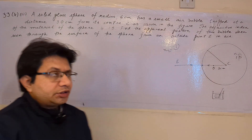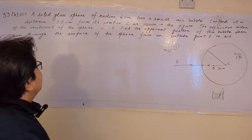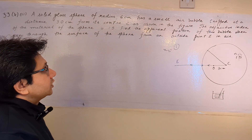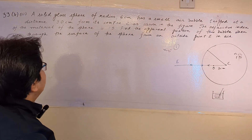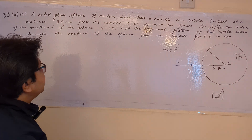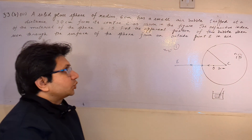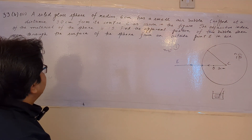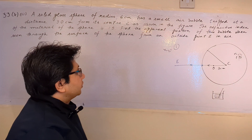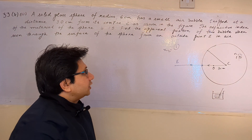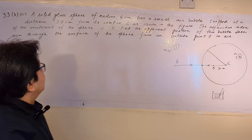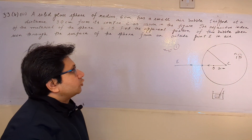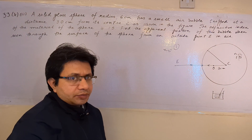Hello students, the question is: a solid glass sphere of radius 6 cm has a small air bubble trapped at a distance 3 cm from its center C, as shown in the figure. The refractive index of the material of the sphere is 1.5. Find the apparent position of the bubble when seen through the surface of the sphere from an outside point E in air.